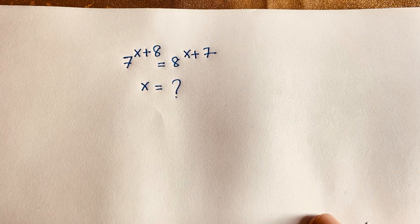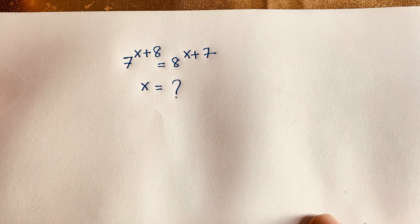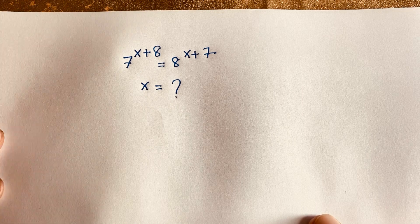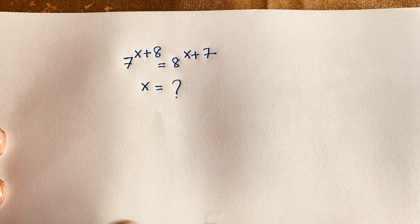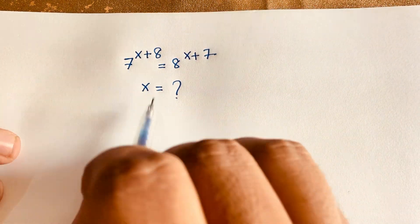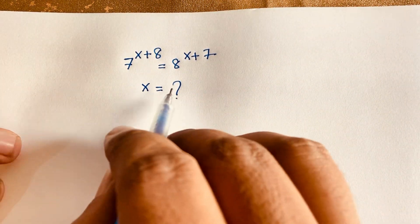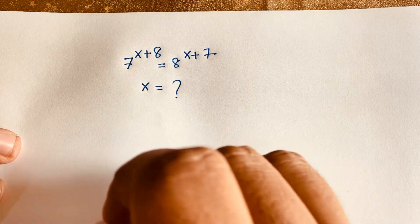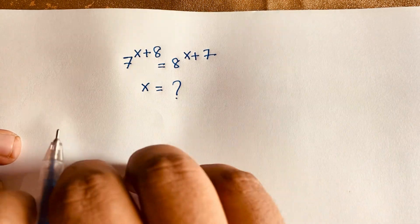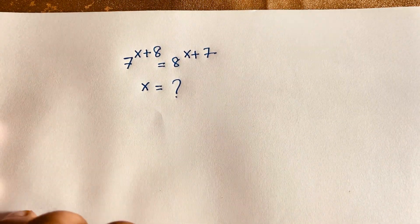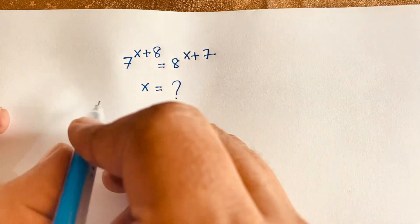Hello everyone. In this video, we have solved this wonderful math Olympiad question. It is an exponential equation. This question is 7 to the power x plus 8 is equal to 8 to the power x plus 7. x is equal to what? How to solve this question? It is an interesting math. So let's start.